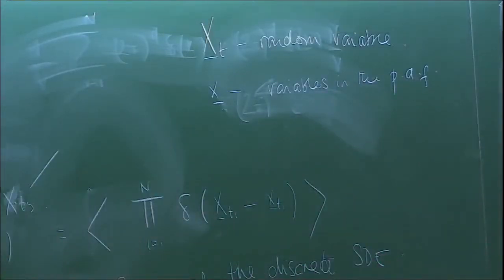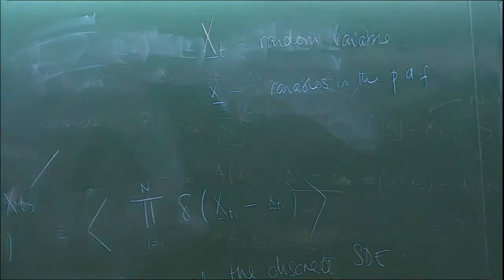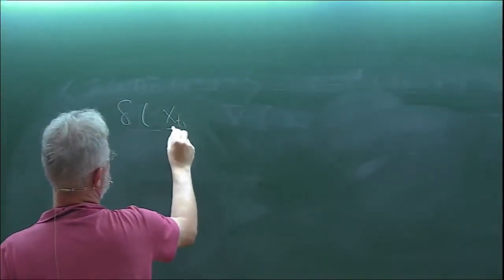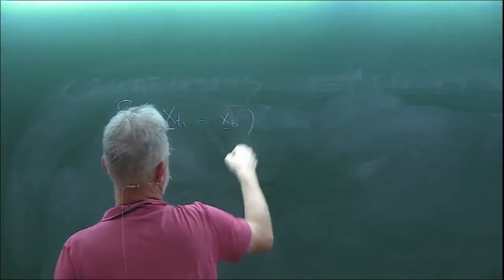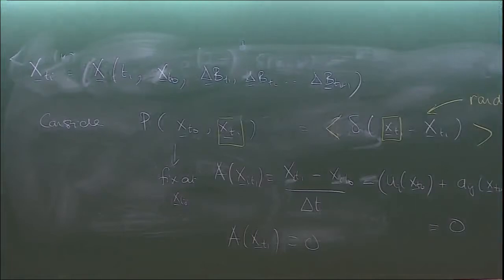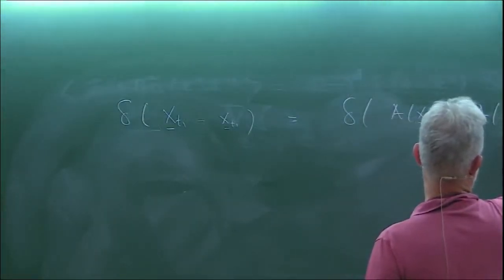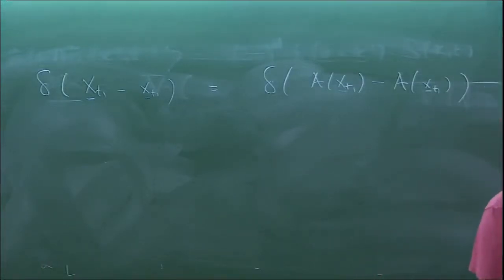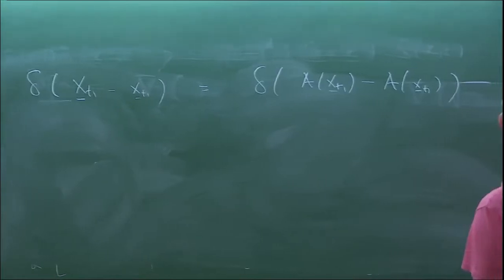Because the Jacobian in the Itô prescription is just a constant independent of the path, you can absorb it into the normalization. The probability is then P(x(t_0), x(t_1)) = const × ⟨δ(A(x(t_1)))⟩, where the expectation is over the Brownian noise. The triangular structure of the full transformation matrix means all diagonal elements are independent of the path, so the entire Jacobian is just a constant.